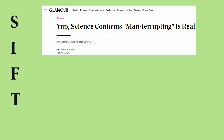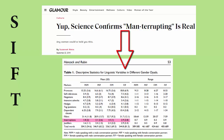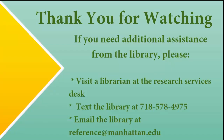So by using this SIFT method, you took an article that may have made you report erroneous information in your paper if you'd just taken it at face value, and used it to find a more reliable source that gives you more nuanced information, and it only took you a few minutes. Thank you for watching, and please feel free to contact us if you're having trouble telling if a source is reliable or how to trace back a claim to its original context.